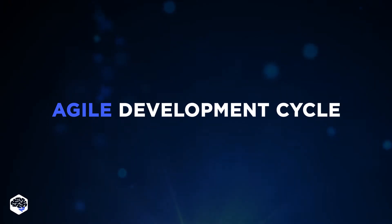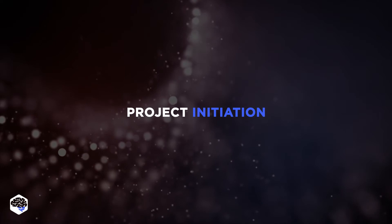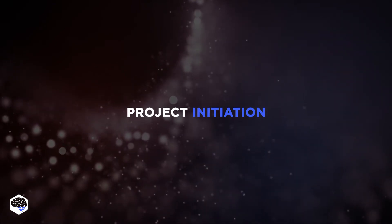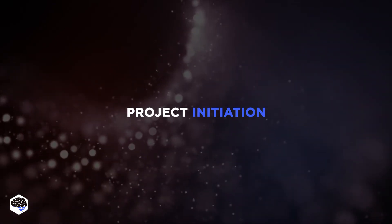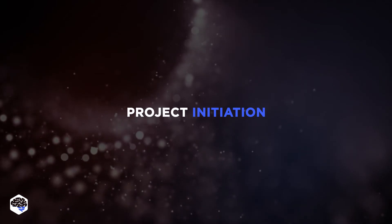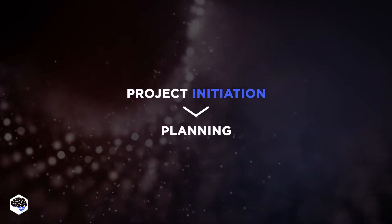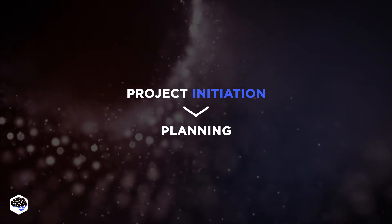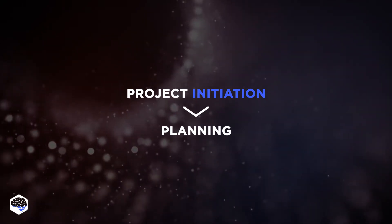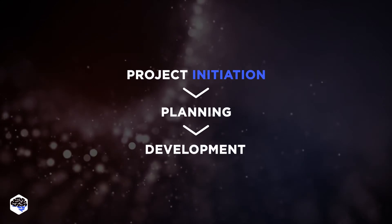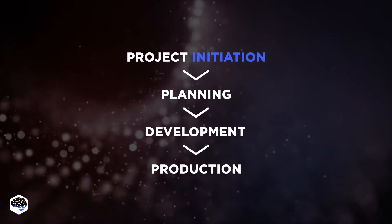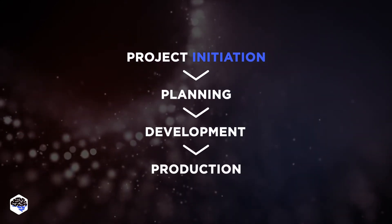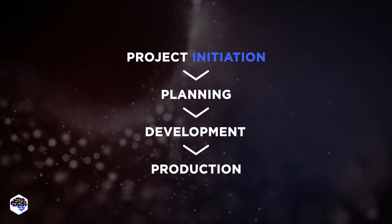Let's now review the Agile development cycle as we see it at GELVIX. Stage 1 — Project Initiation: here we usually discuss the project vision with stakeholders and evaluate the ROI. Stage 2 — Planning: our business analysts and project managers meet with product owners to define clear objectives and milestones. Stage 3 — Development. Stage 4 — Production stage, where our experts monitor the usage, detect bugs, and fix them.